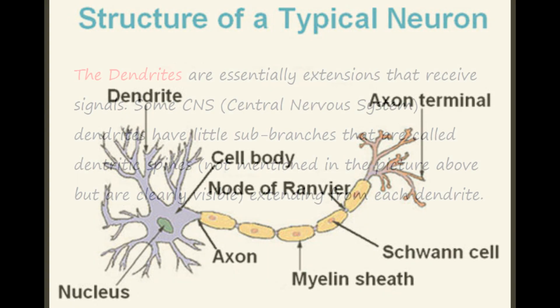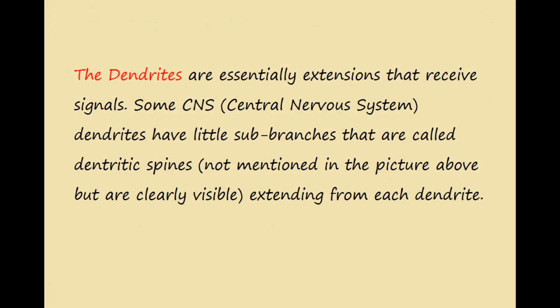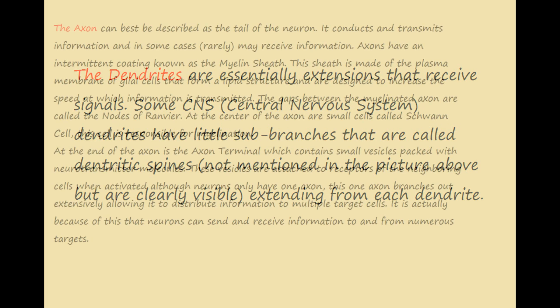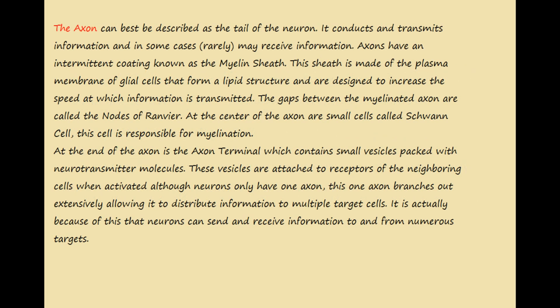The dendrites are extensions that receive signals. Some central nervous system dendrites have little sub-branches called dendritic spines extending from each dendrite. The axon is described most of the time as the tail of the neuron — it conducts and transmits information, and in some cases may also receive information.